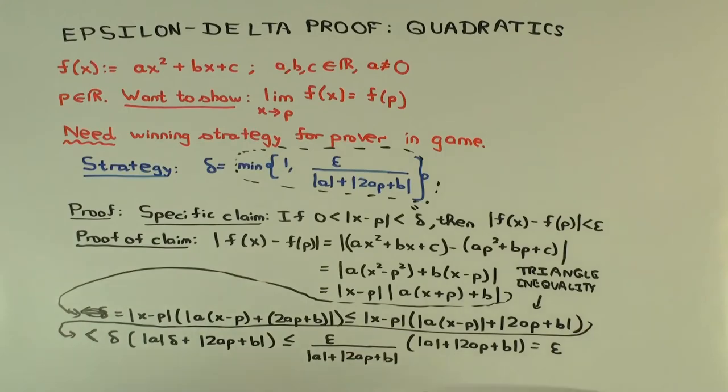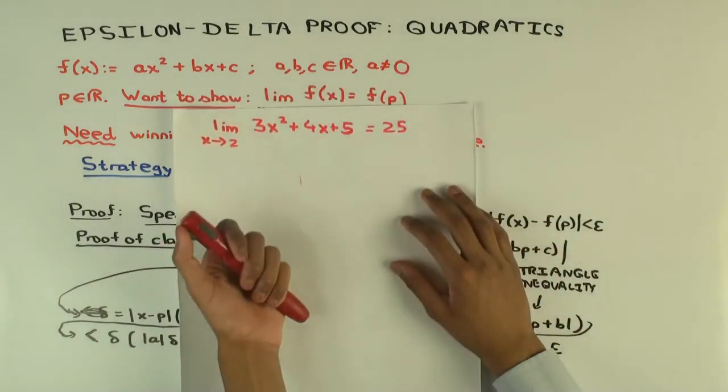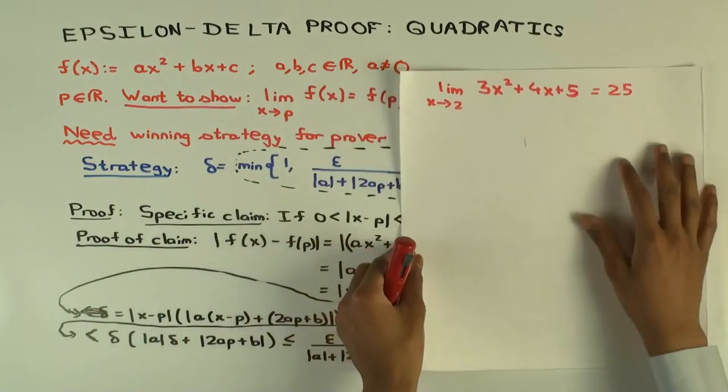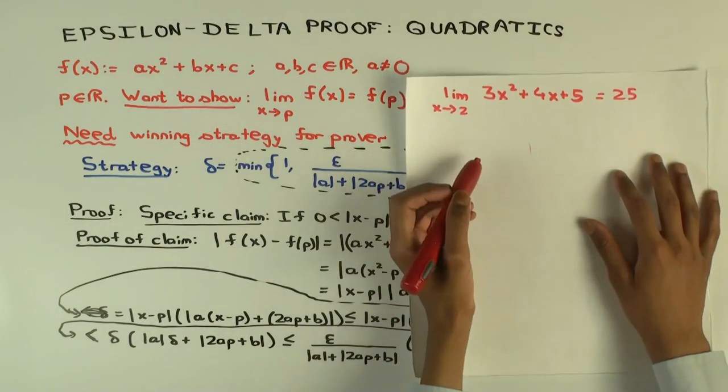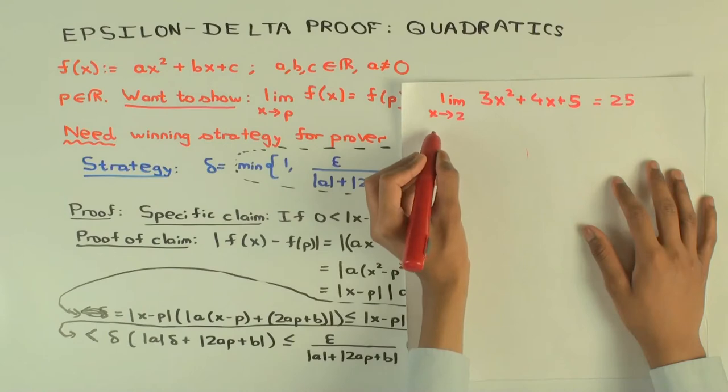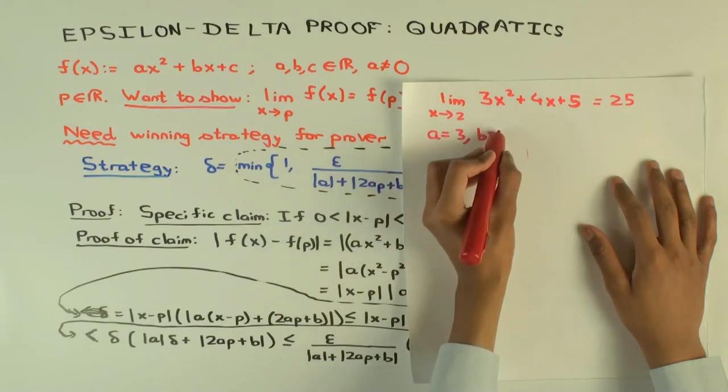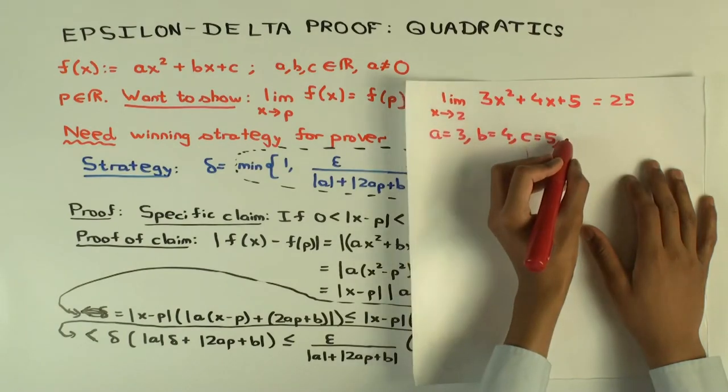Here's what I want to prove: limit as x approaches 2 of 3x squared plus 4x plus 5 is 25. So what in my setup, what are a, b, c, and p? a is 3, b is 4, c is 5, and p is 2.